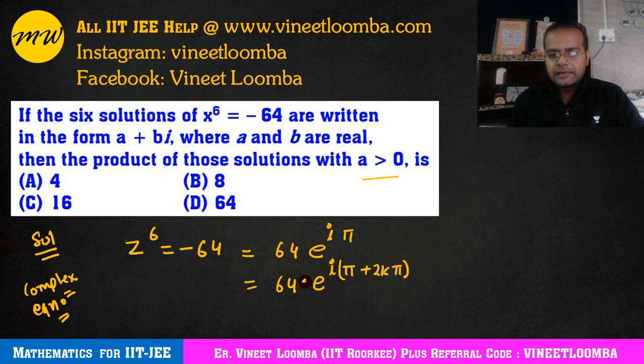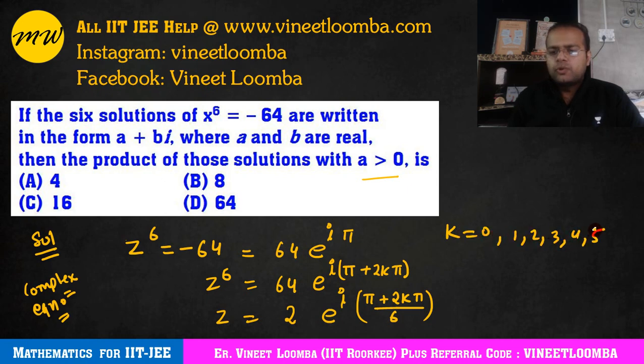So pi plus 2k pi did it. Now this six will go to the other side. So 64 to the power 1 by 6 is done. So 2 came, e to the power i times pi plus 2k pi upon six, this value we got. So this is the general value. In this k takes values 0, 1, 2, 3, 4 and 5. Any 6 consecutive values we can put in this. So I am putting these 6 consecutive values.